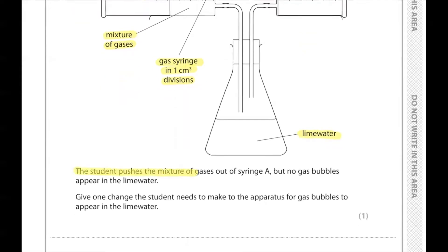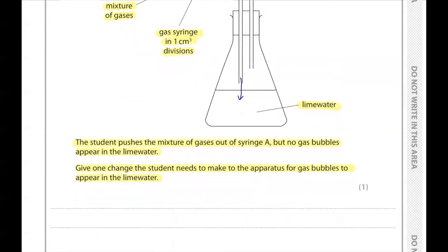The student pushes the mixture of gases out of syringe A, but no gas bubbles appear in the lime water. Give one change the student needs to make to the apparatus for gas bubbles to appear. The student must add more lime water to cover the tube on the left, or the glass tube on the left should be longer so that it can reach the lime water.